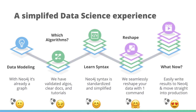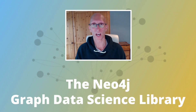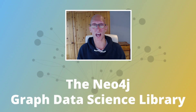All of this leads to a simplified data science experience. Data modeling is not such a problem because with Neo4j the data is already a graph. We've got easy docs to work with, algorithms that have been validated on big datasets, tutorials to go with these, standardized and simplified Neo4j syntax, and you can reshape your data very easily with a simple command. Then we can easily write the results to Neo4j and move straight into production. That's the end of this video on the Neo4j graph data science library — hopefully you've got a good understanding of how this makes the graph data science experience much better, and in our next video we're going to look at how we can actually go about using this library.